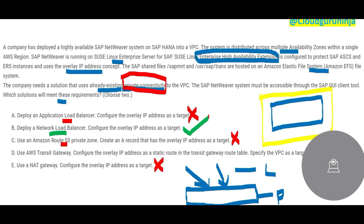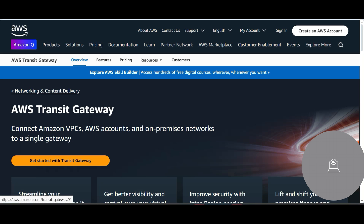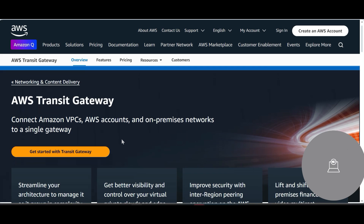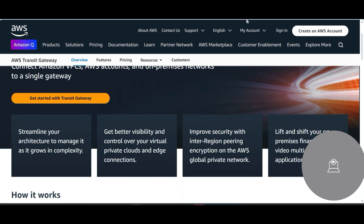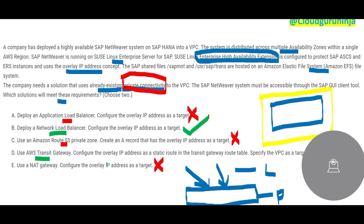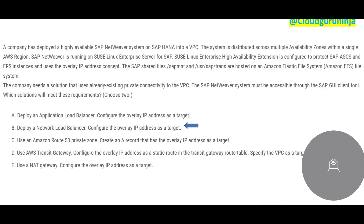Transit Gateway is the answer. With Transit Gateway you can connect VPCs, accounts, and on-premises networks all in one go. It will make use of the overlay IP address concept, the static route, and the Transit Gateway route table. This would be your answer.